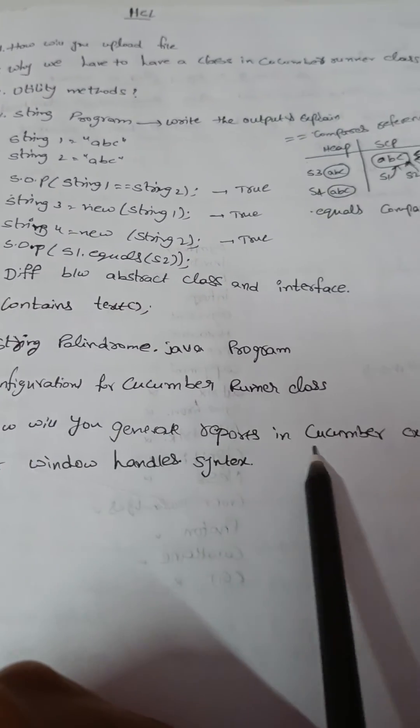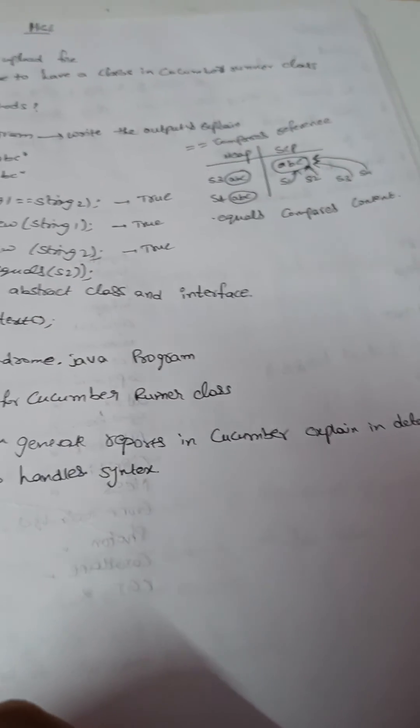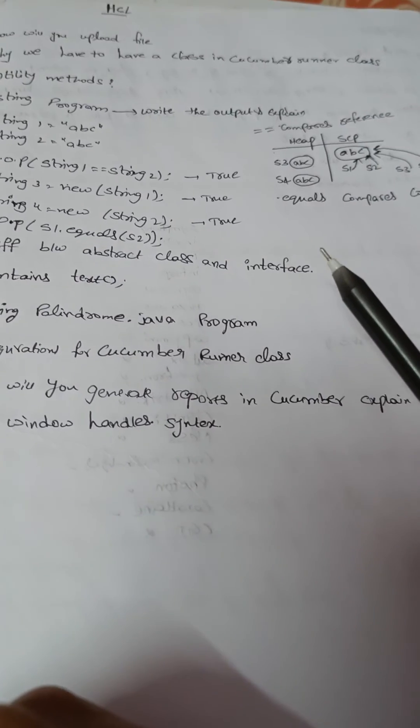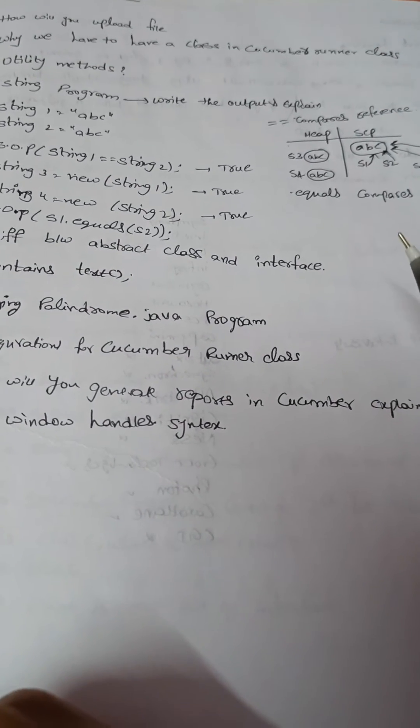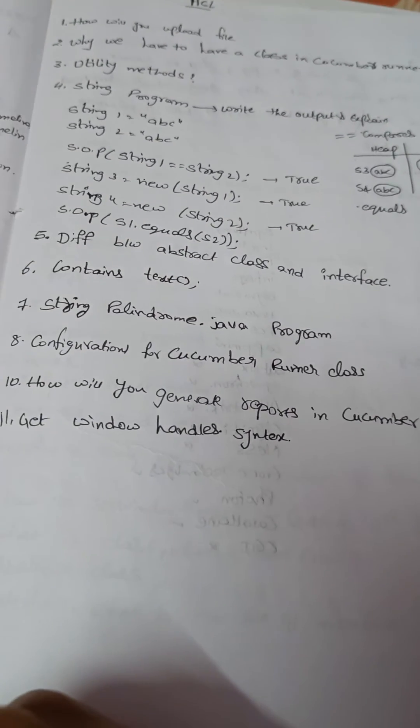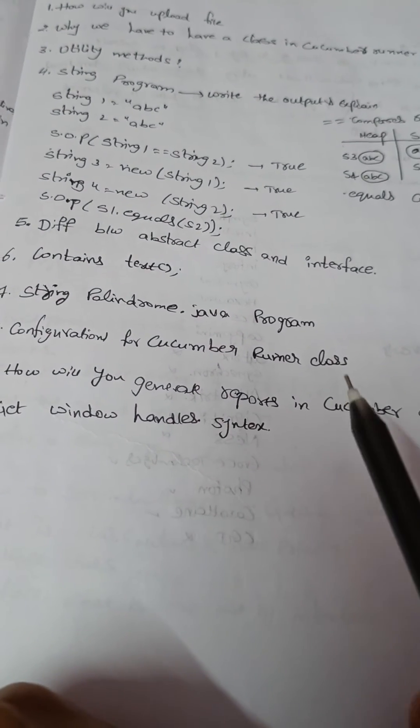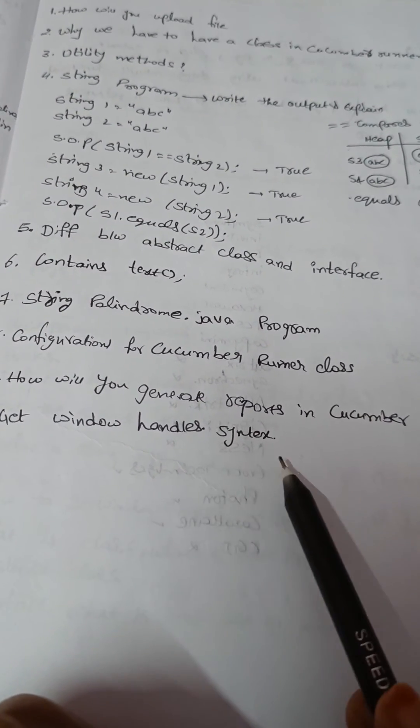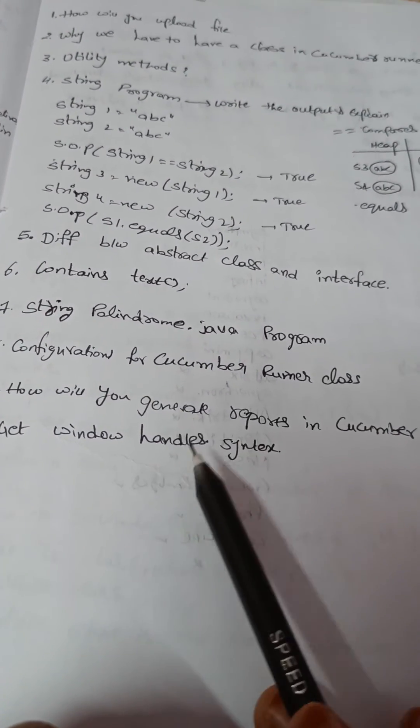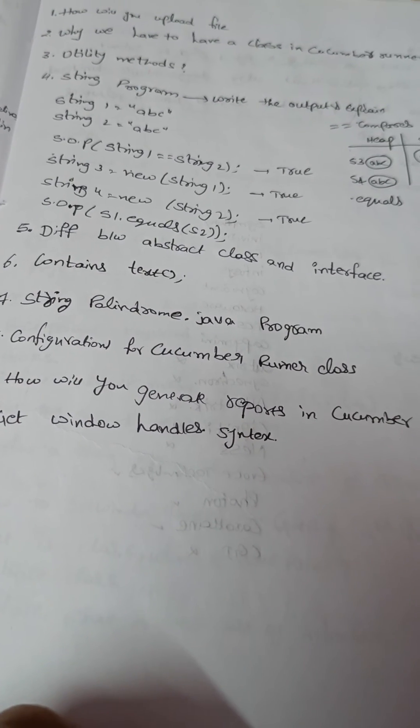And tenth question is how will you generate reports in Cucumber. Explain in detail. So how we will be generating report in our Cucumber framework. We have to explain in get window handles syntax. So we have to write in the chat box and we have to send the syntax of the get window handles. So thank you.